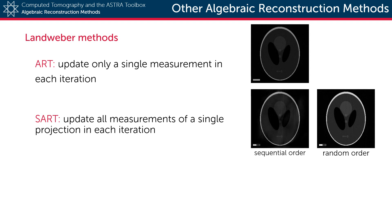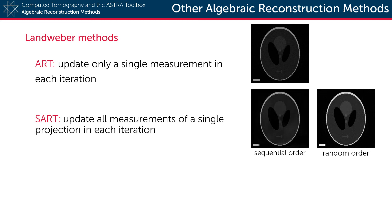The order in which the projection directions are chosen is essential for optimal reconstruction quality. Doing them sequentially is a very bad idea, as each subsequent projection brings relatively little new information to update. Instead, doing them in a random order is much better in terms of accuracy and convergence speed.